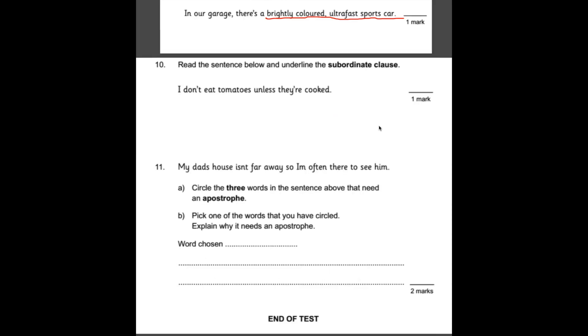Number ten, read the sentence below and underline the subordinate clause. You should know that a main clause makes sense by itself. It can stand by itself. But a subordinate clause is connected to the main clause using a subordinate conjunction. And that bit doesn't really make sense by itself without the main clause. So in this sentence, we have, I don't eat tomatoes. That's the main clause. That makes sense by itself. Unless they're cooked. Unless is the subordinate conjunction. And they're cooked would be the remaining bit of the clause. So all of that here, including the conjunction. Unless they're cooked is the correct answer.